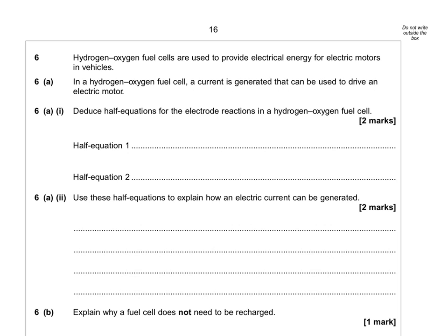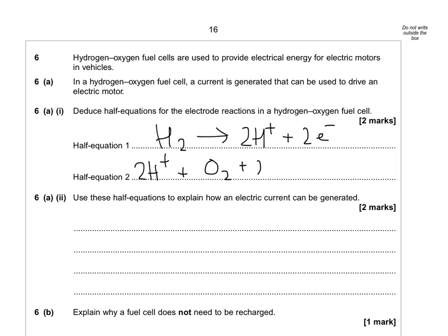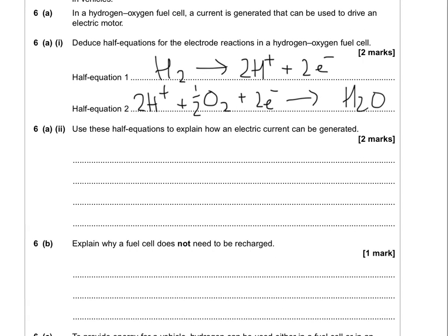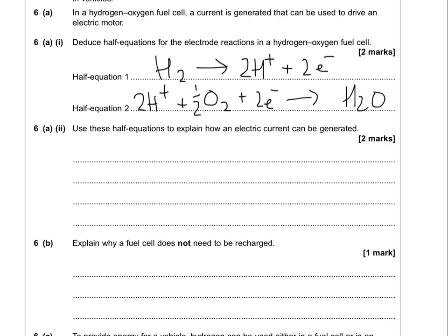Hydrogen and oxygen fuel cells are used to provide electrical energy for electric motors in vehicles. Use half equations for the electrode reactions in a hydrogen–oxygen fuel cell. First: H₂ → 2H⁺ + 2e⁻ — hydrogen is pumped onto the electrode and splits up. Then: 2H⁺ + 2e⁻ + ½O₂ → H₂O — the protons and electrons react with oxygen at the other electrode to make water. To explain how an electric current is generated: the hydrogen electrode produces electrons (mark 1), and the oxygen electrode accepts the electrons (mark 2) — electrons move around the circuit.